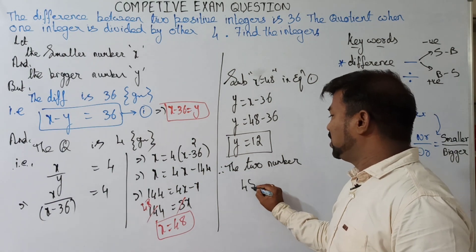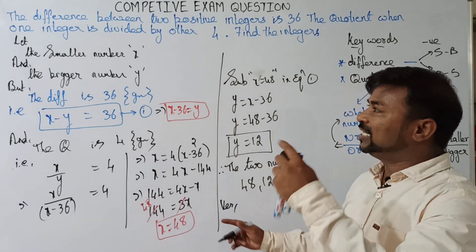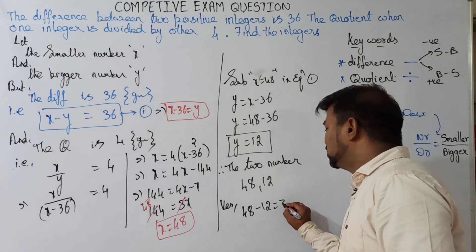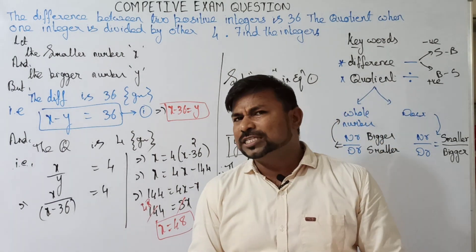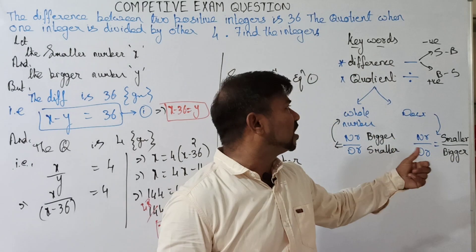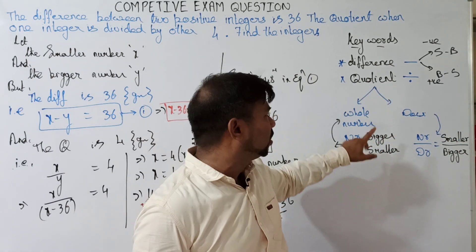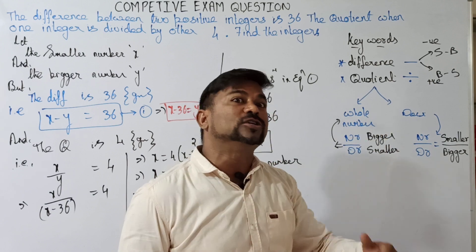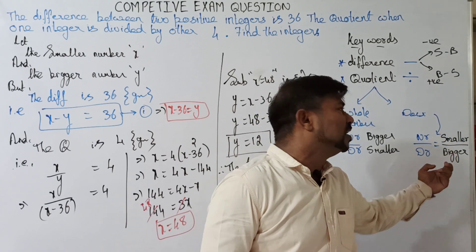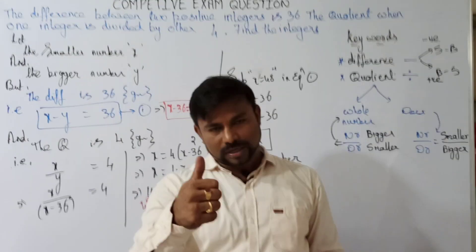Therefore the two numbers are 48 and 12. For verification: 48 minus 12 equals 36 — confirmed! The logics to remember: if the quotient is a whole number, numerator is the bigger and denominator the smaller; if the quotient is a decimal, numerator is smaller and denominator is bigger. Thank you!